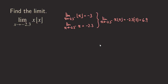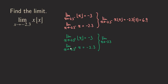Now we take the limit as x approaches negative 2.3 from the right of the floor function. We get the same result — negative 3 — because that is still the largest integer less than something close to negative 2.3 from the right. The limit of x is also negative 2.3. So the right-side limit of x times the floor of x is also negative 2.3 times negative 3, which equals 6.9. Since both one-sided limits are equal, the two-sided limit exists and equals 6.9.